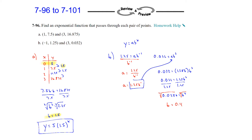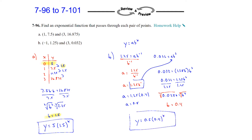Now we plug b = 0.4 back into our expression for a: a = 1.25 times 0.4, giving a = 0.5. So the initial value is 0.5 and the multiplier is 0.4. The equation is y = 0.5 · (0.4)^x. Both methods are fine — the table method finds the multiplier through the pattern, while the algebraic method sets up and solves a system.